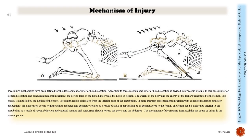Two injury mechanisms have been defined for inferior hip dislocation, dividing it into two subgroups. In the rarer case — inferior ischial dislocation with concurrent femoral inversion — the person falls on the flexed knee while the hip is in flexion. The weight and energy of the fall are transmitted to the femur, amplified by body flexion, dislocating the femoral head from the inferior edge of the acetabulum.